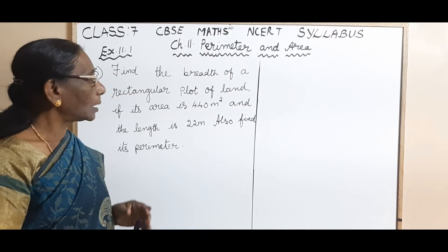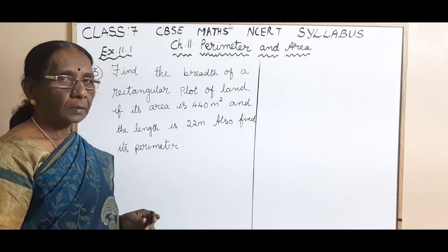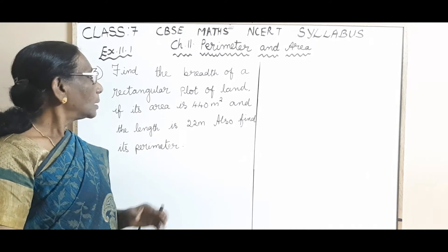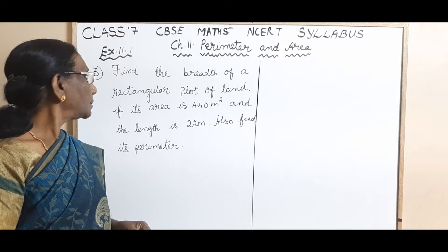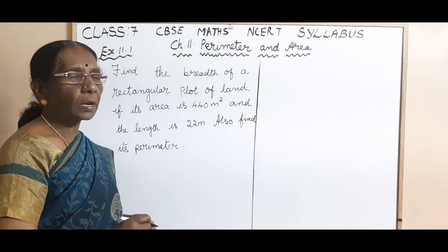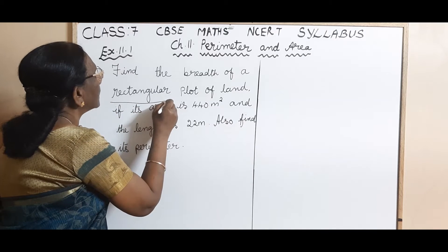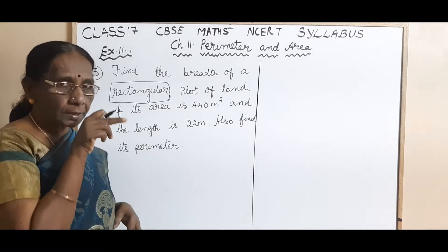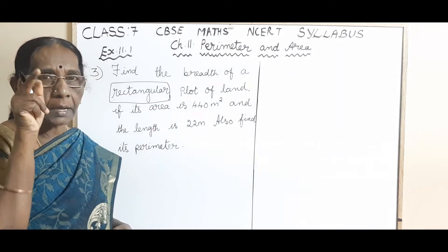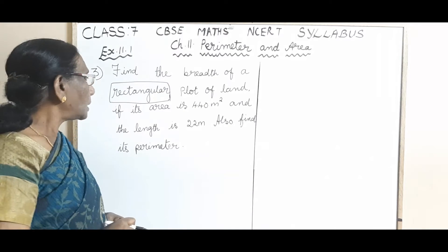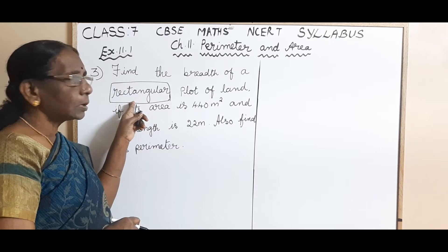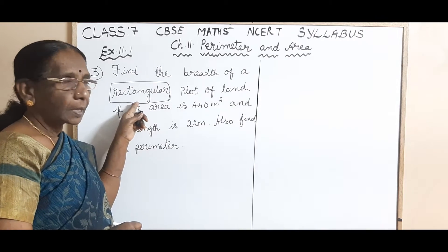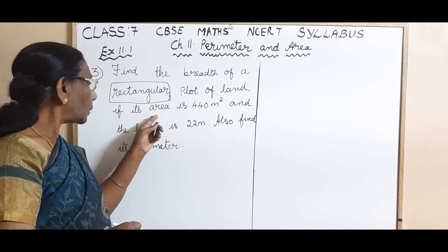We have finished reading the question. Now, what have you understood? The shape of the land given in this question is a rectangular plot. So the shape is a rectangle, and as soon as you imagine a rectangle, it has two dimensions — one is the length, the other one is the breadth.